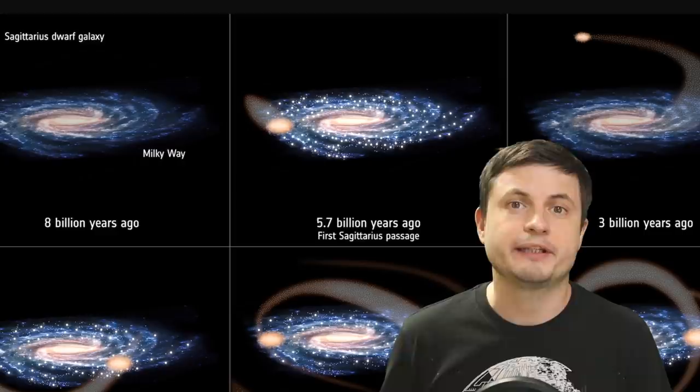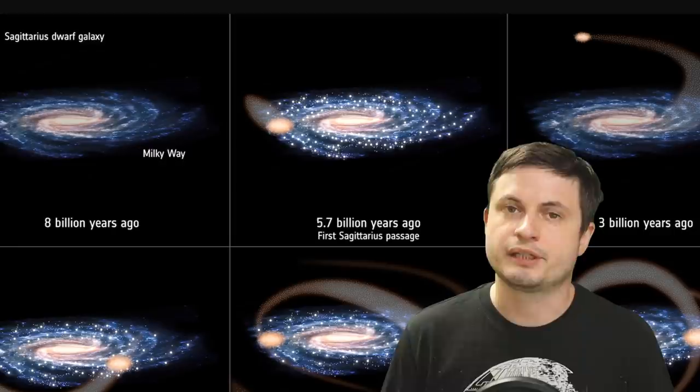With the major star formations happening at least three times in the history of the Milky Way and the ones caused by Sagittarius dwarf galaxy happening about five billion years ago, two billion years ago and one billion years ago. Which of course suggests that the galactic collision in this case or the slow absorption of another galaxy eventually led to the creation of the solar system, earth and us.